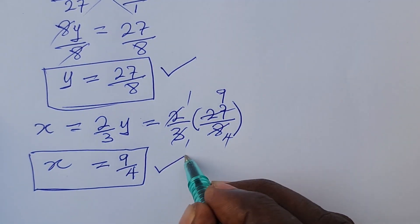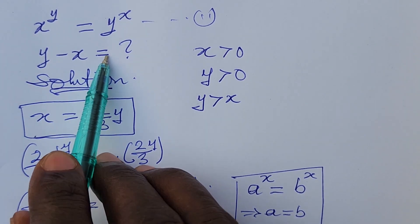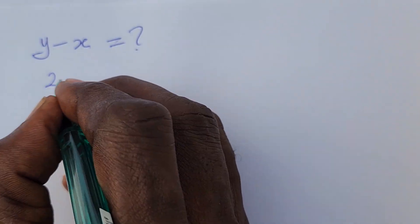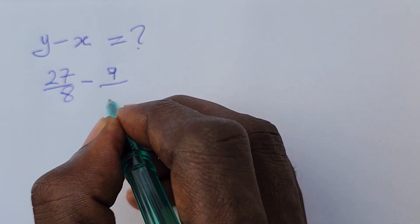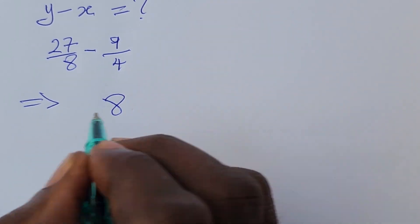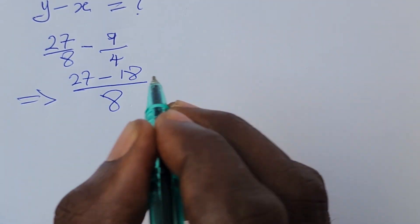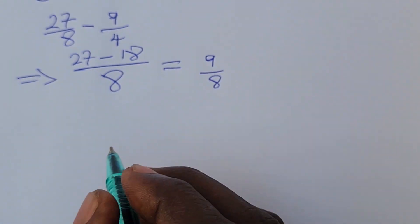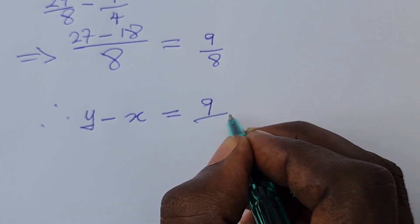Now that we've succeeded in getting our y and our x, let's go and look for y minus x. So substituting, our y is given to be 27 over 8 minus and our x is 9 over 4. If we carry out our arithmetic here, this will give us 27 minus 18 over 8. So if we carry out this arithmetic, this will automatically give us 9 over 8. Therefore, we can say y minus x is equal to 9 over 8.